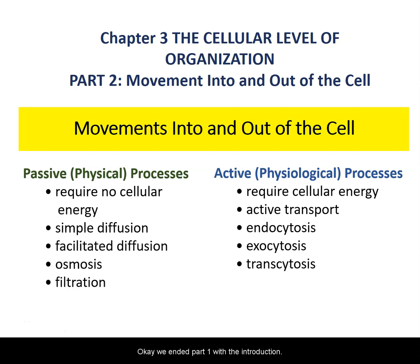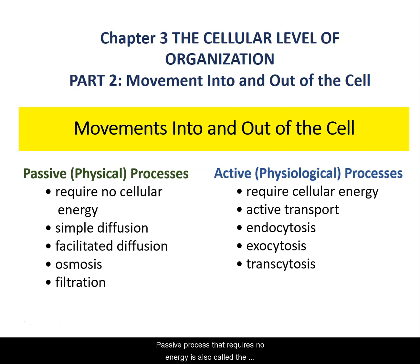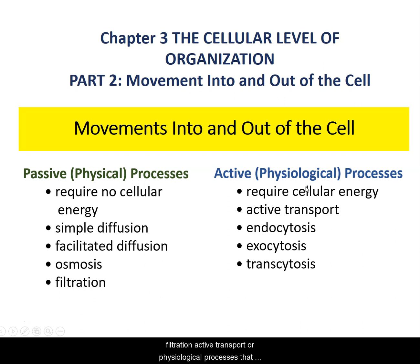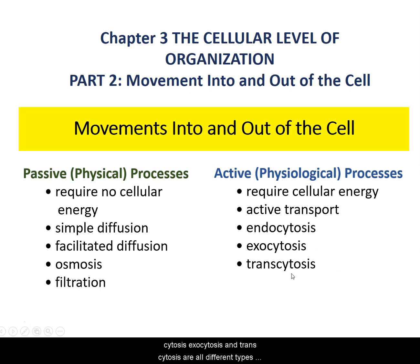We ended part one with the introduction to movement into and out of the cell and the cell membrane structure. Now let's talk about those processes. The passive process requires no energy — it's also called a physical process. It includes simple diffusion, facilitated diffusion, osmosis, and filtration. Active transport, or physiological processes, require cellular energy; these include endocytosis, exocytosis, and transcytosis.